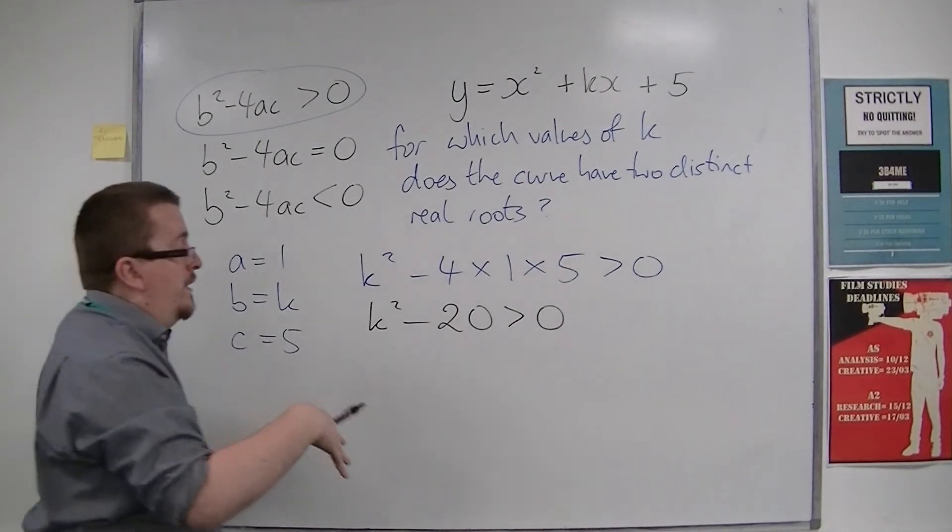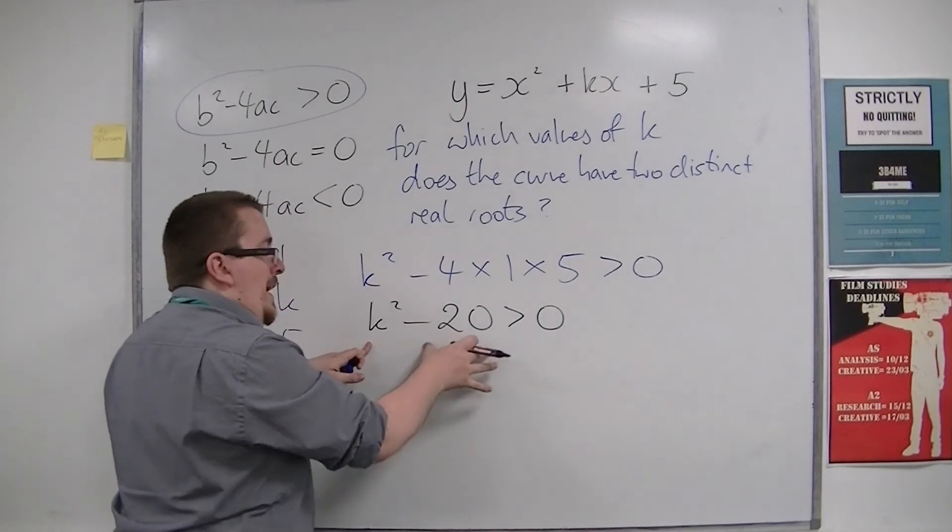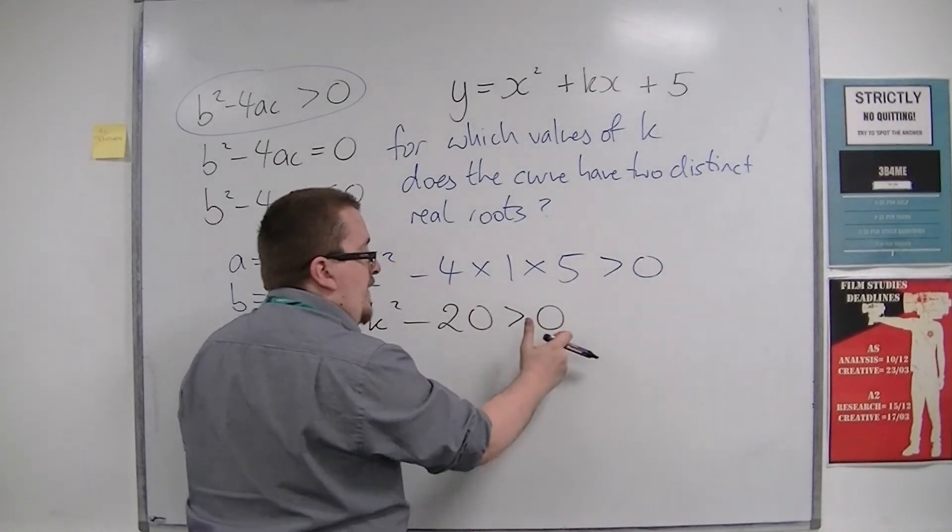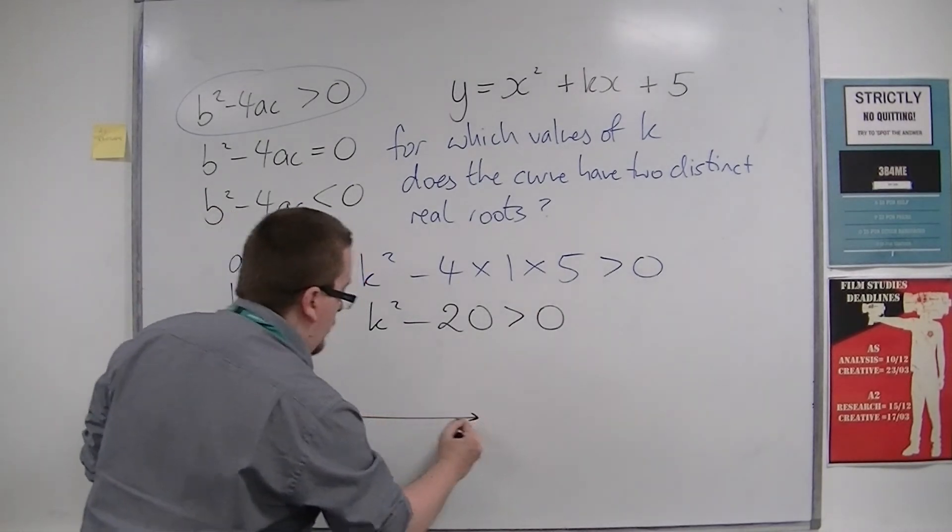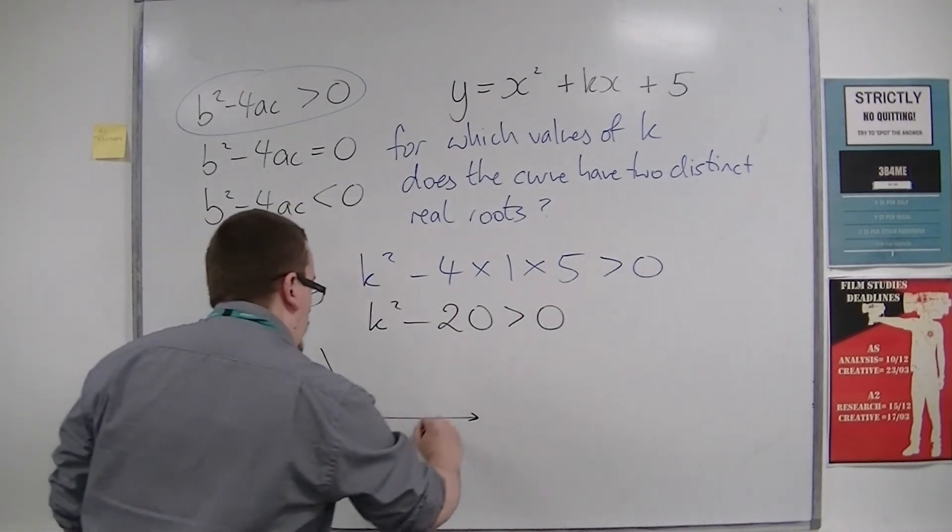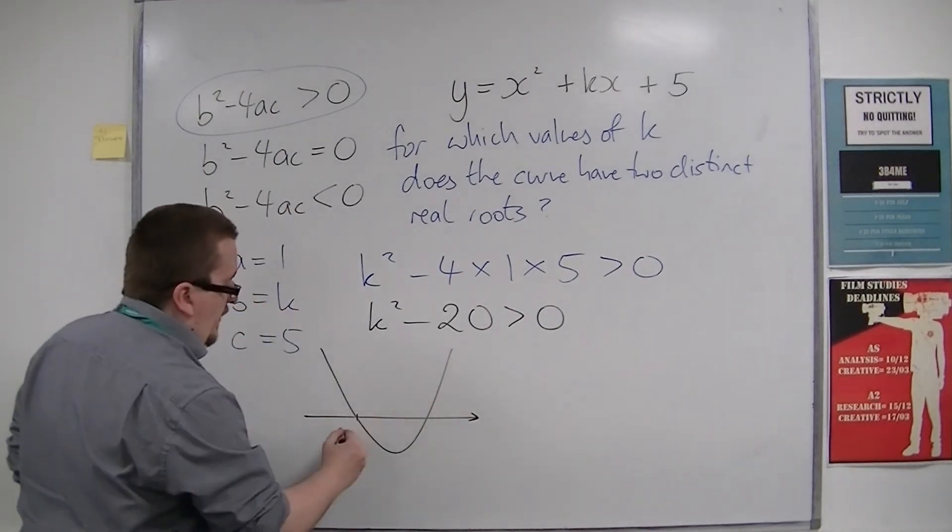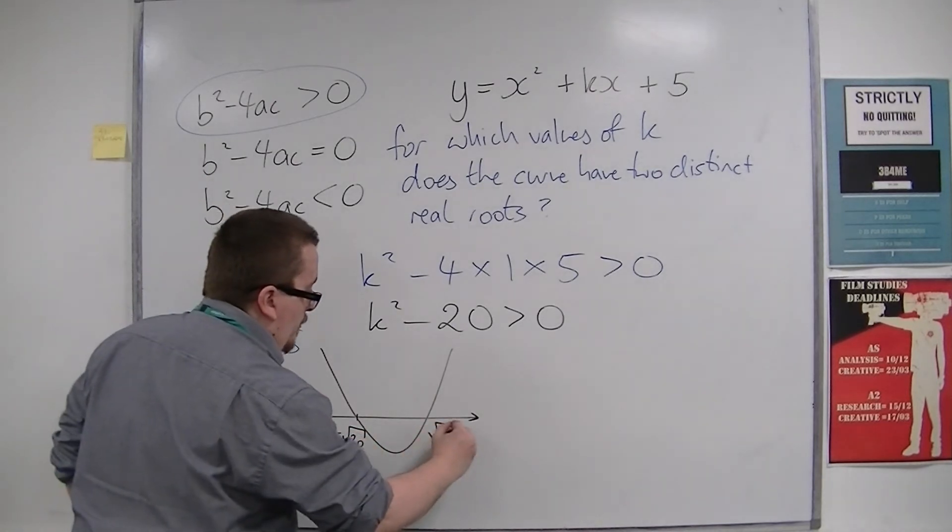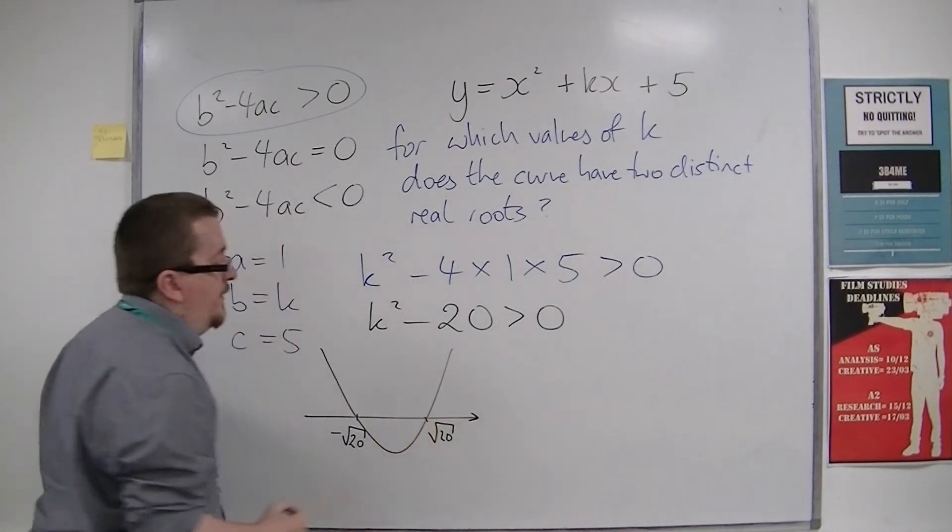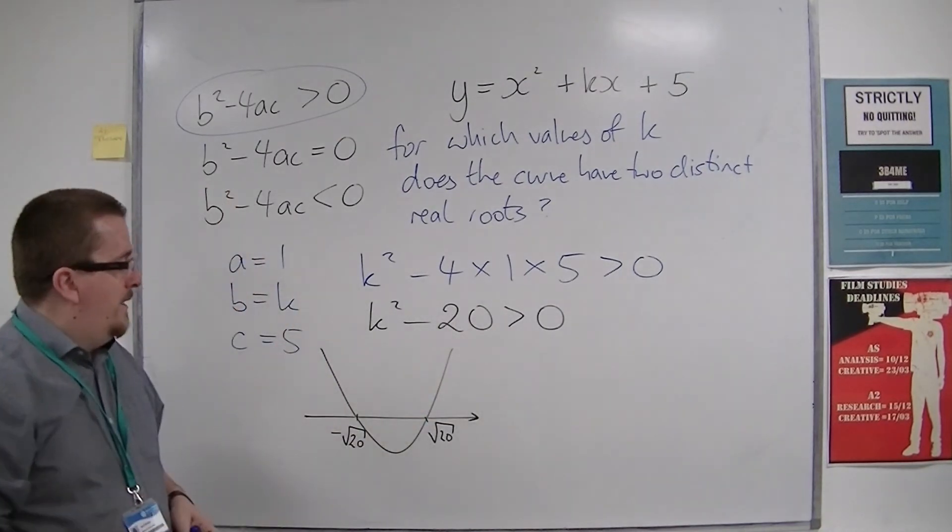And then we'd say to ourselves, this is a quadratic. Where is this quadratic above the x-axis? So we're going to need to make a sketch. It would be crossing through the x-axis at minus the square root of 20 and positive square root of 20.